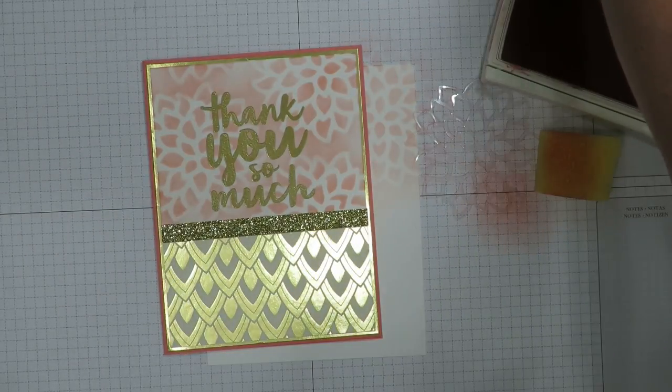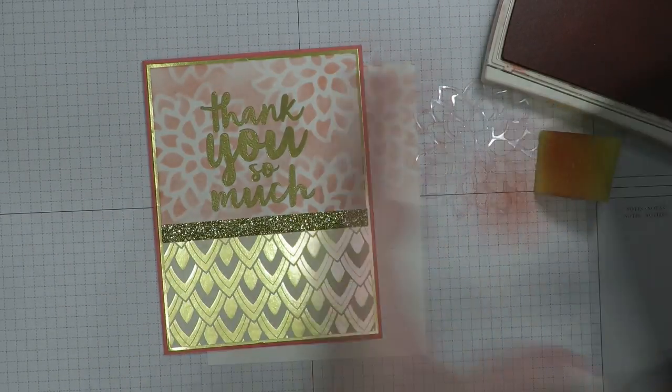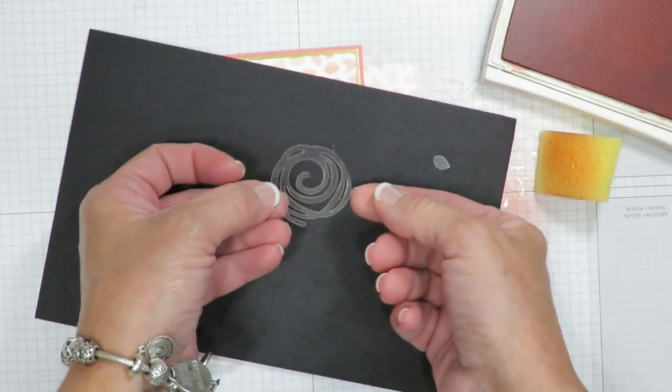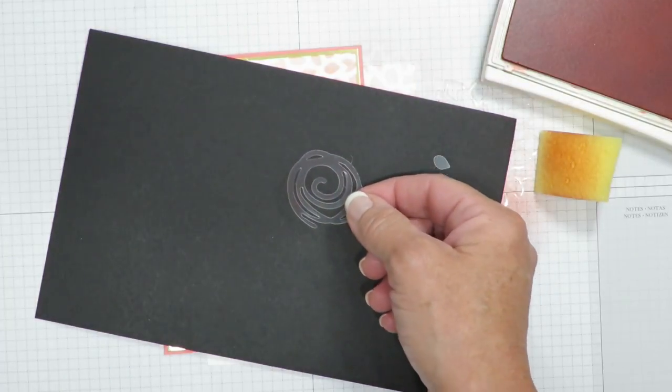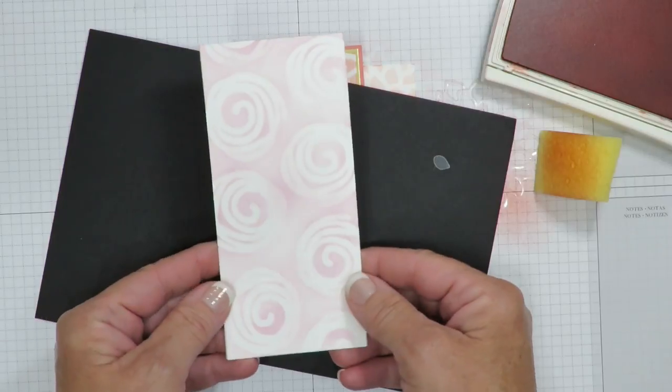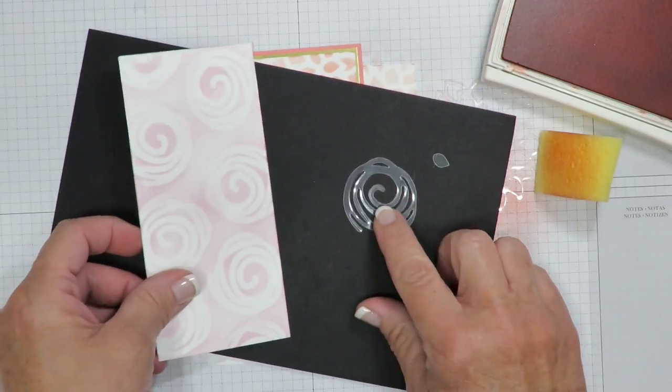I have one other for you that I want to share. And this one I actually die cut from the swirly scribbles. And here's a panel that I made. This is using sweet sugar plum. So much fun!